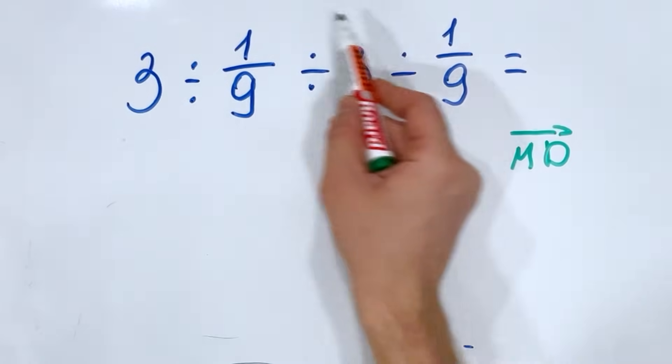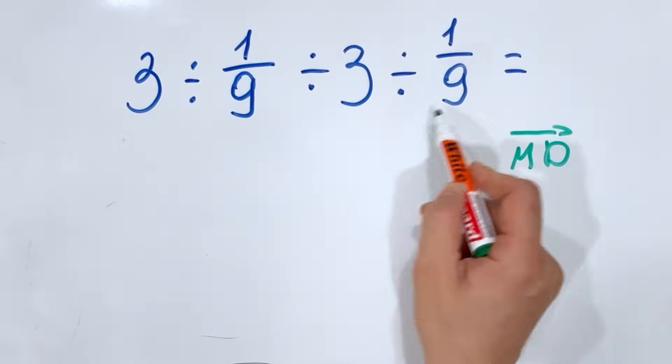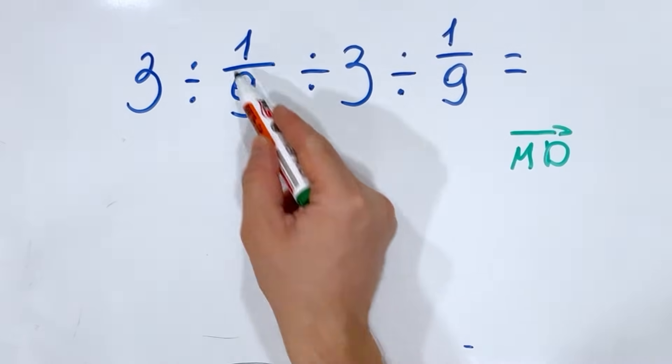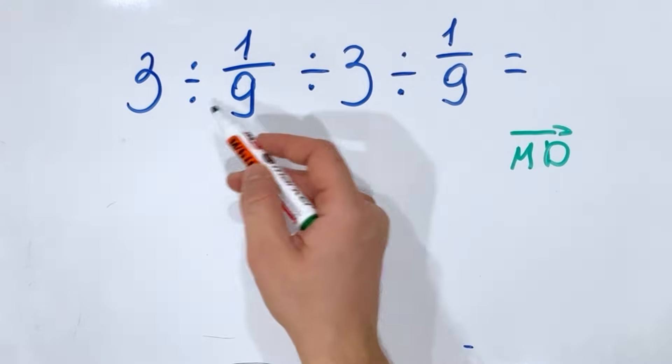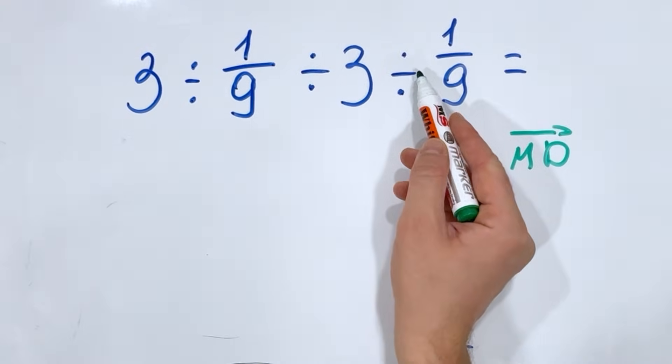Here we see that we have only division, therefore we do it from left to right. We cannot do the right side and the left side separately. So we do first this one, then this one, and then this one.